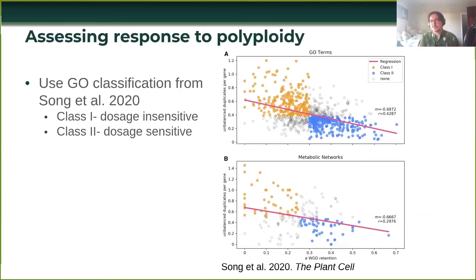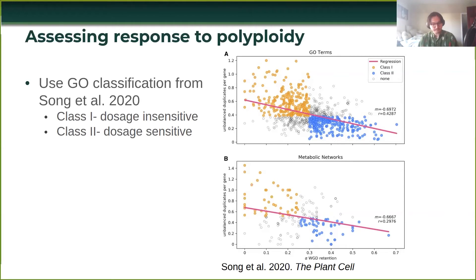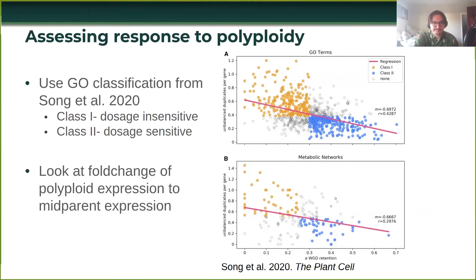The first step was to borrow the classifications of gene ontology terms that Song et al. used for their study, dividing GO terms into ones presumed to be dosage-insensitive — those more likely to be retained by small-scale duplications like tandems and segmentals — and dosage-sensitive genes in blue, which are more likely to be retained by whole genome duplications, specifically the alpha whole genome duplication in Arabidopsis. Since Brassica napus is phylogenetically very close to Arabidopsis and the Arabidopsis annotation is far better, I transposed the GO terms for Arabidopsis orthologs onto the Brassica genes.